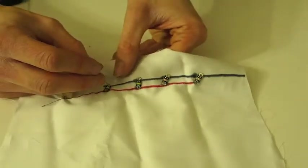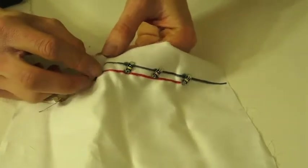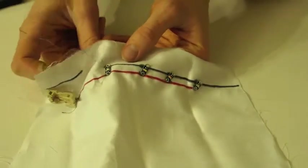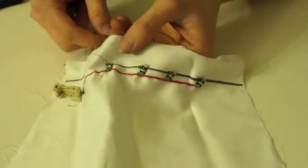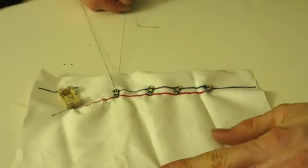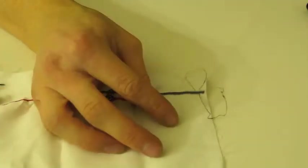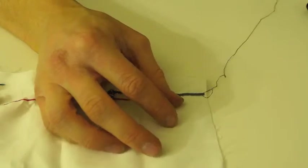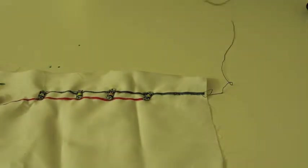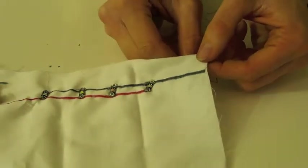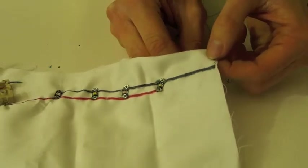Next, we're going to sew our negative terminal line. Starting with the LED closest to your battery terminal, push the needle through the negative terminal of the LED and tie it off with a double knot. Do a couple loops to ensure that the connection is secure. Continue to follow along the negative line connecting LEDs until you reach the end of the fabric. Unthread your needle and leave the extra slack of thread for later. Make sure not to cut it.